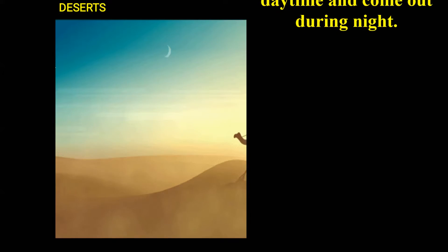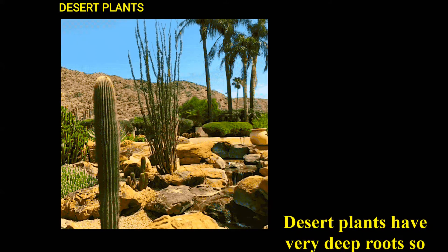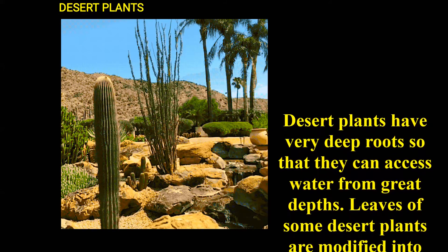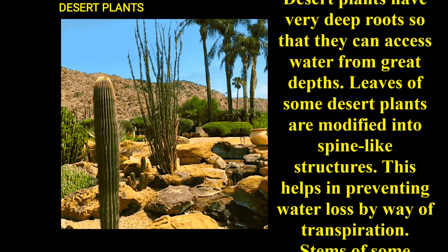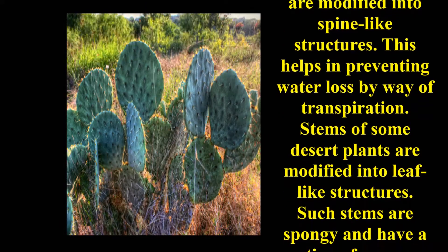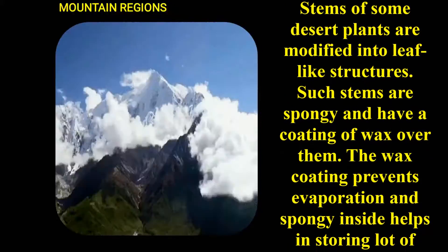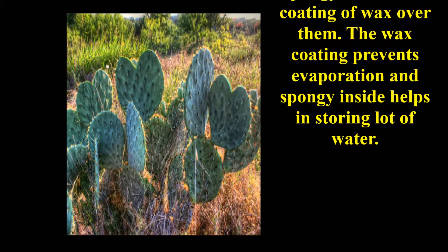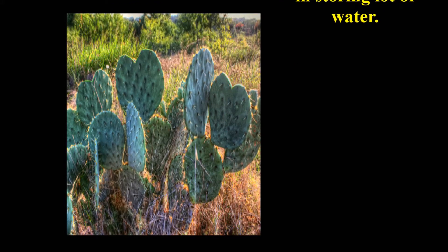Desert plants have very deep roots to absorb water from great depths. Leaves of some desert plants are modified into spine-like structures, which helps prevent water loss through transpiration. Stems of desert plants are modified into leaf-like structures that are spongy with a coating of wax. The wax coating prevents evaporation, and the spongy inside helps store a lot of water.